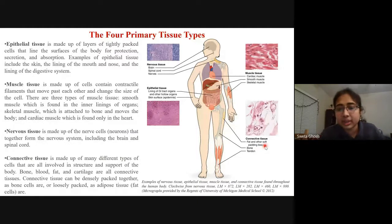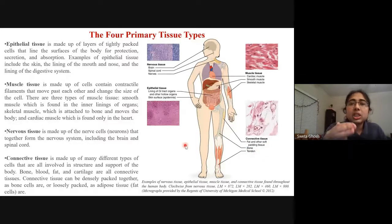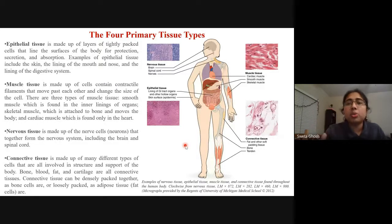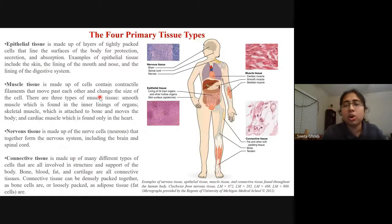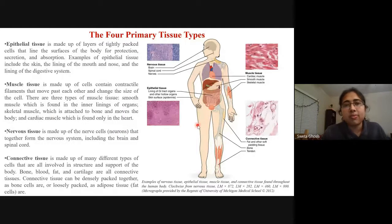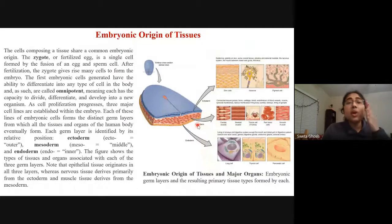Connective tissues include a wide variety — from fat cells to bone to tendon. These four types of primary tissues make up the whole body, with all organs composed of either a combination of all four, a combination of two, or just a single tissue type.